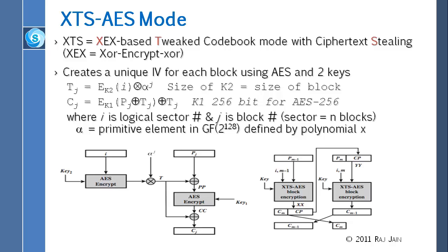So this is what is called XTS-AES mode: Exclusive-OR, Encrypt, Exclusive-OR; Tweak; and this is a codebook mode. It is a codebook mode because you take a number and look up the output. This is actually a codebook, except that it is tweaked — the book changes every time you look at it, so this is a tweaked codebook mode with cipher text stealing. Since this became an IEEE standard in 2007, NIST made it a standard as well.